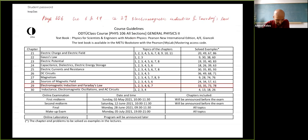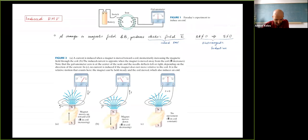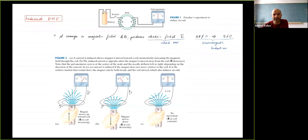Let me start with a quick review. This week I started talking about Chapter 29 — electromagnetic induction and Faraday's law. Basically, if you have a change in magnetic flux, that induces an EMF in the circuit. By Lenz's law, the induced EMF opposes the change: if you increase flux, the circuit creates a current to reverse it; if you decrease flux, it creates a current to restore it; if there's no change, nothing happens.